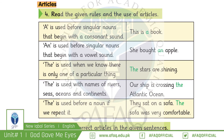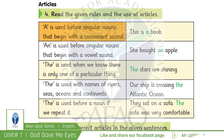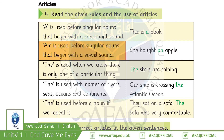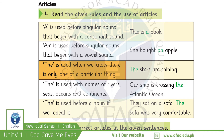اب ہم page number 6 پر articles کے بارے میں پڑھیں گے۔ A، AN اور THE کو article کہتے ہیں۔ Article use کرنے کے rules یہ ہیں: The first rule is 'A' is used before a singular noun that begins with a consonant sound — یعنی A ہمیشہ singular noun کے ساتھ use ہوتا ہے جس کا first letter consonant ہو۔ 'AN' is used before singular nouns that begin with a vowel — AN singular noun کے ساتھ use ہوتا ہے جس کا first letter vowel ہو۔ 'THE' is used when we know there is only one of the particular thing.